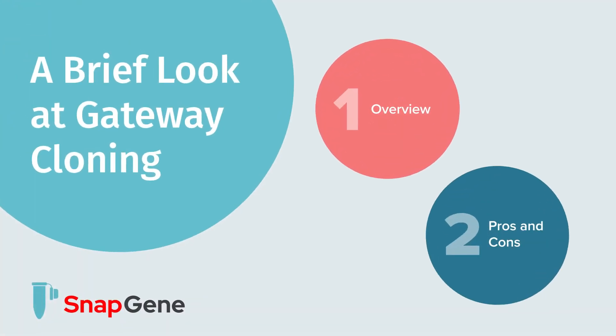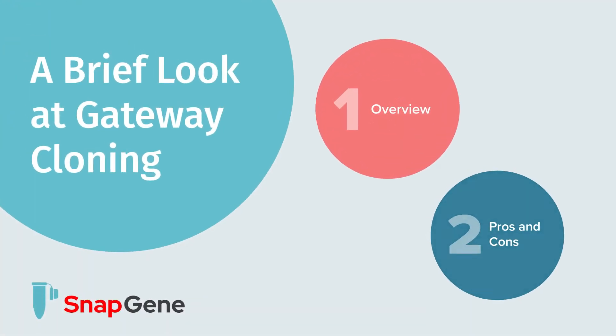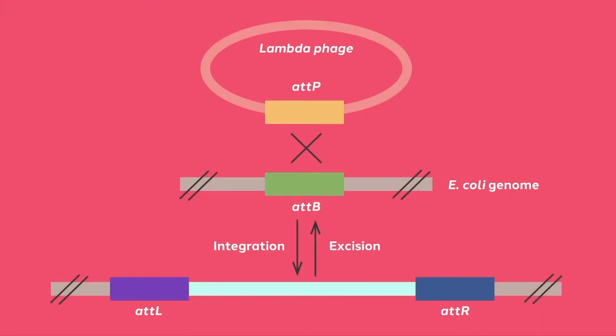In this video, we are going to review the methodology of gateway cloning. Gateway cloning is based on the site-specific recombination machinery used by phage lambda to integrate its genome into E. coli.